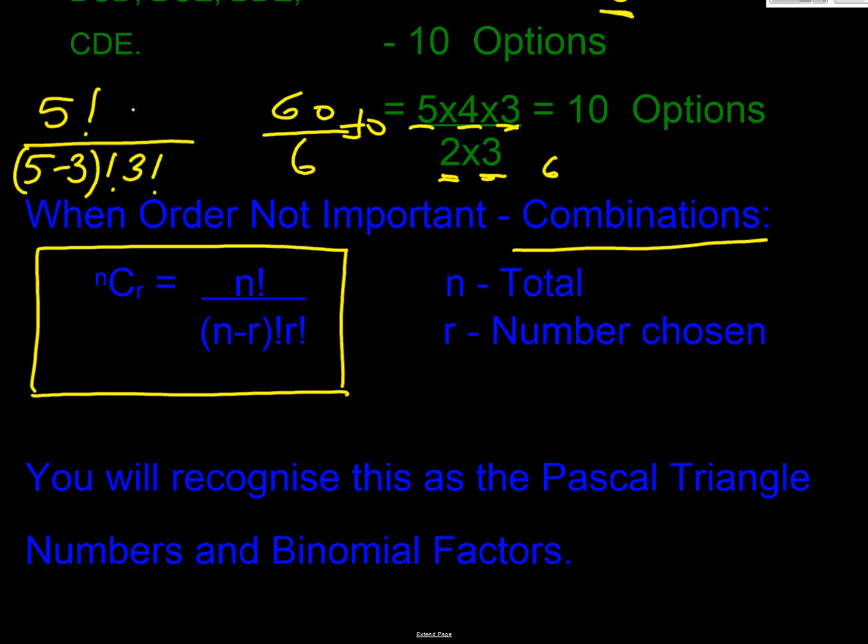So if we work that one through, we have 5 times 4 times 3 times 2 times 1 on the top. And then we've got our 2 times 1 there. And then we're multiplying it by 3 times 2 times 1. So these ones are going to cancel out. Well, that 2 is going to cancel out with that 4. And that brings us back. There's our 10.